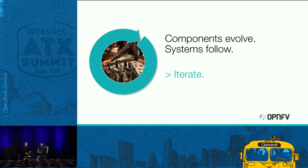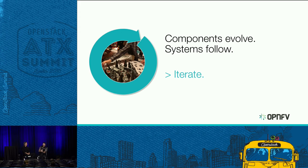We don't run a scenario once and call it done — we run it all the time, we hammer it all the time. At ONS a few weeks back I asked my release engineering guy how many OpenStack clouds we'd stood up this year, and he said 1,377 — we're closing on 2,000 OpenStack clouds. We don't keep them for long though.